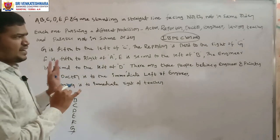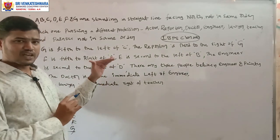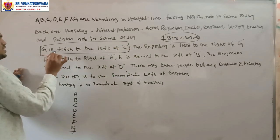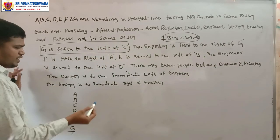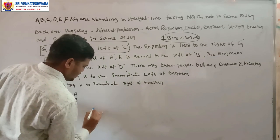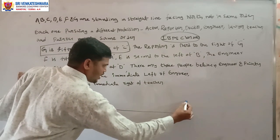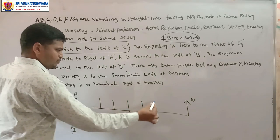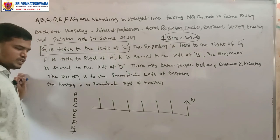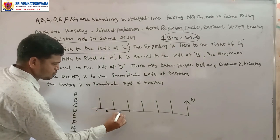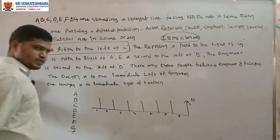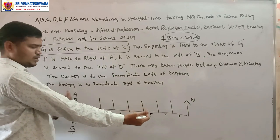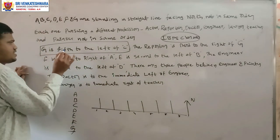First, check if there is any direct data given. The first statement says G is the fifth to the left of C. We have seven positions total — 1, 2, 3, 4, 5, 6, 7 — facing north, so this direction is right and this is left.